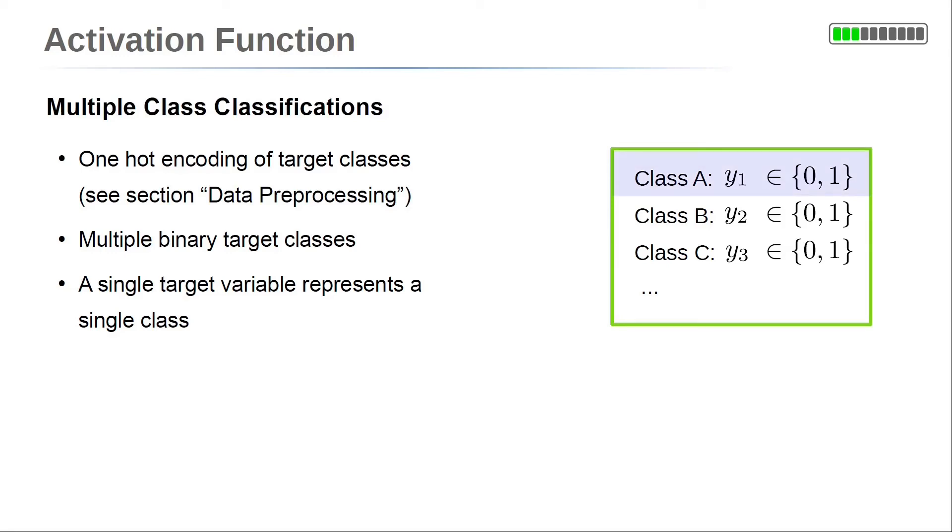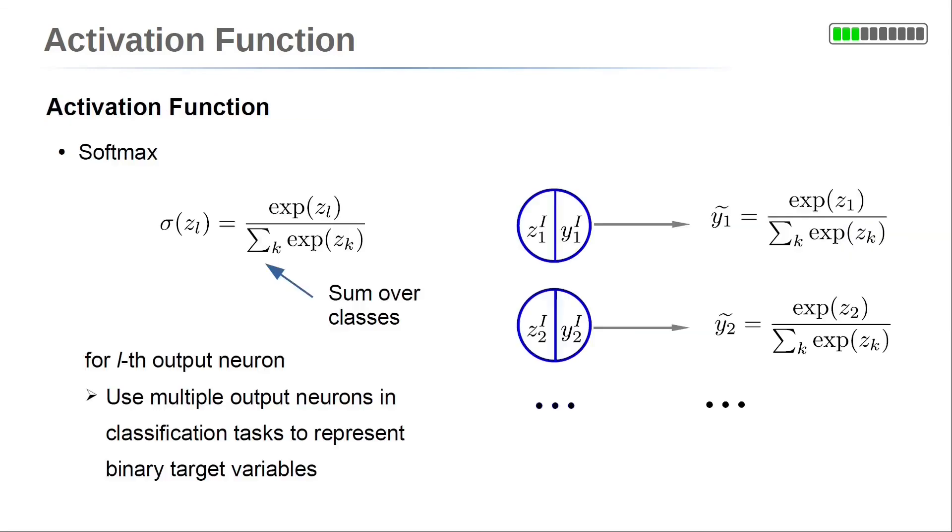For example, y1 represents if class A is present or not. y2 represents if class B is present or not. And so on. For this multi-class classification problem, softmax regression could be used. If we want to use more flexible models, a neural network can be used as well.